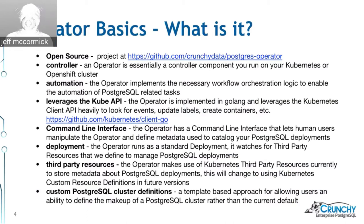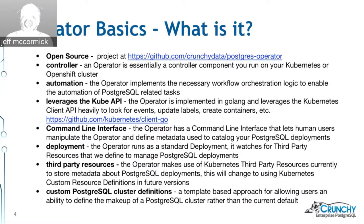I'm really excited about third-party resources and custom resource definitions — I think that was a great feature the Kubernetes team put together; it makes things like the Postgres operator much more possible. The operator uses a template-based approach for what makes up a Postgres cluster: a master database container, a series of replica containers, services for those containers, and a Postgres SQL-based router proxy. All of those things make up what we call a Postgres cluster, and you can define them in a template.